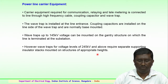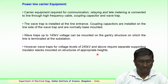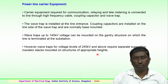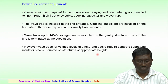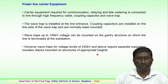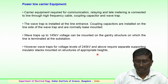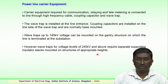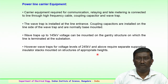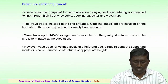Wave traps or line traps up to 145 kV voltage could be mounted on the gantry structures on which the line is terminated at the substation. For higher voltages — more than 220 kV or 400 kV — there should be a special arrangement where these wave traps could be planned and mounted. Wave traps for voltage levels above 220 or 245 kV require separate insulating stacks, with clearances from the ground on the mounting structures, maintaining appropriate heights depending upon the voltage level, to be properly mounted.